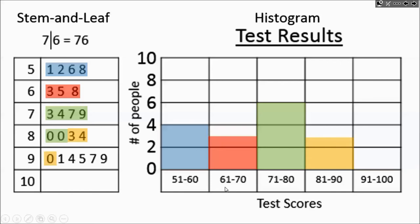Finally, 91 to 100. You've got one, two, three, four, five of them. And nothing in the hundreds row. Nobody.